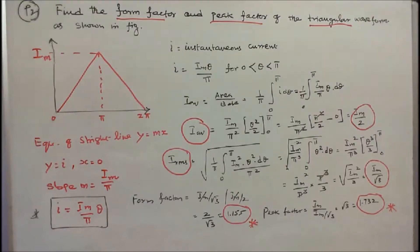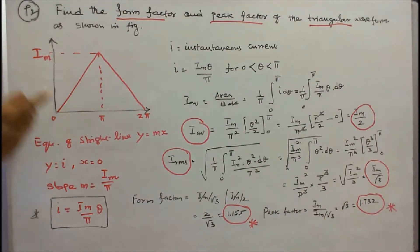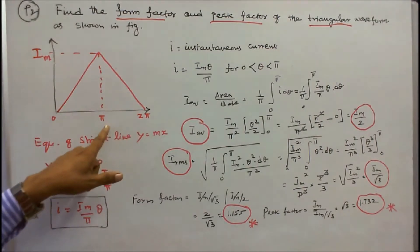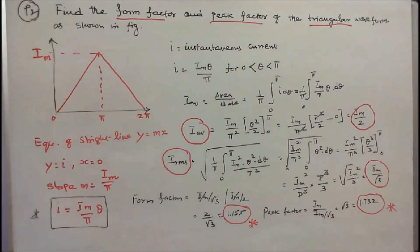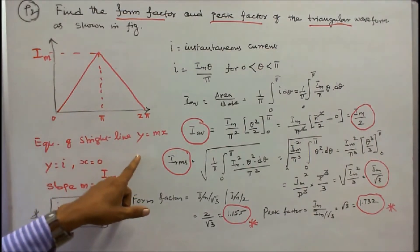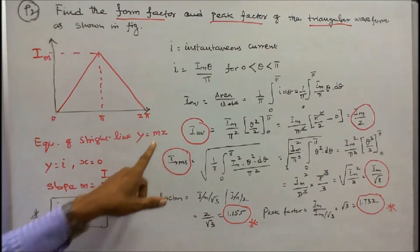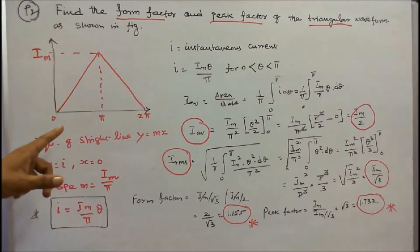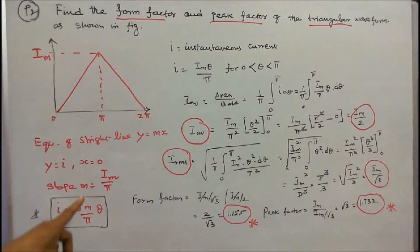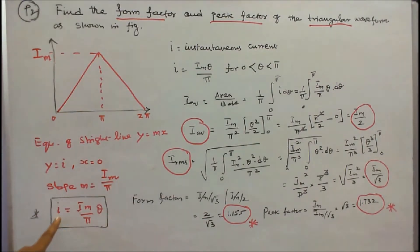Problem 2: find the form factor and peak factor of the triangular waveform as shown in the figure, with maximum current I_m, marked at pi and 2 pi. Using the equation of a straight line y = mx, where slope m = I_m / pi, the instantaneous current is I = I_m × θ / pi.